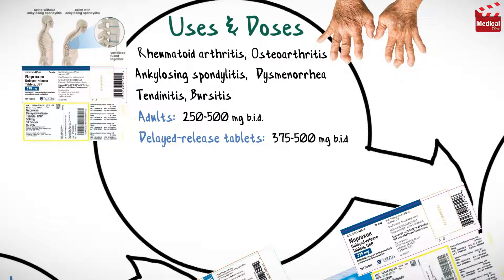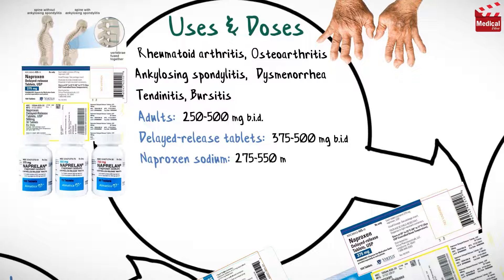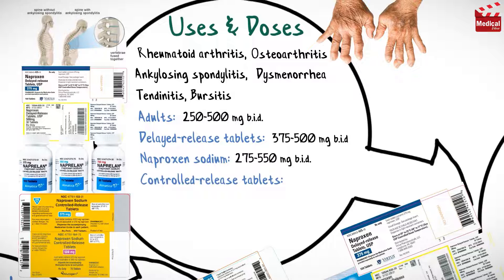When using naproxen sodium, the dose is 275 to 550 milligrams twice a day. When using controlled release tablets, the usual dose is 750 or 1000 milligrams per day. Naproxen is also used for acute gout.